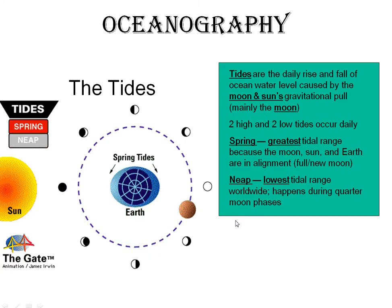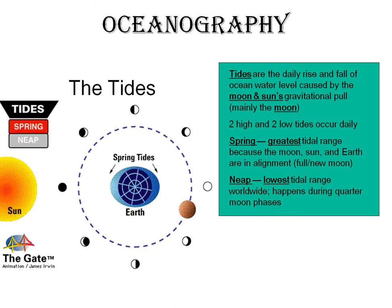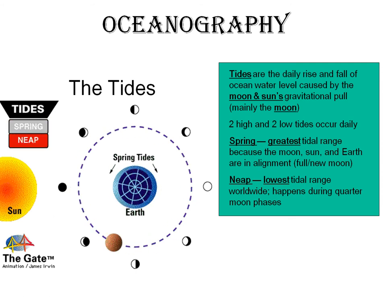First, tides. If you've been to the beach, you know that the height of the water changes throughout the day. This is called the tides. Tides are the daily rise and fall of ocean water caused by the moon and sun's gravitational pull. However, the moon is what actually causes most of the change in tides. Typically, you get about two high tides and two low tides a day. It happens a little over six hours between tides.